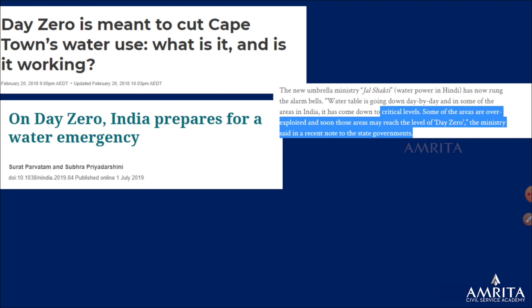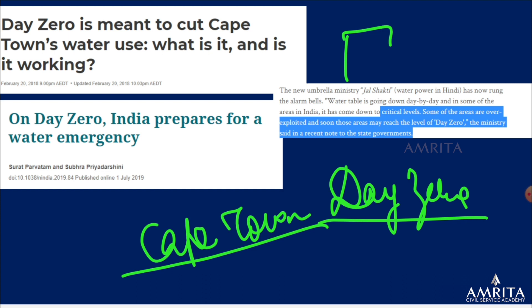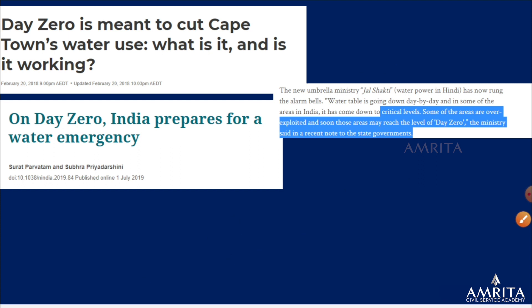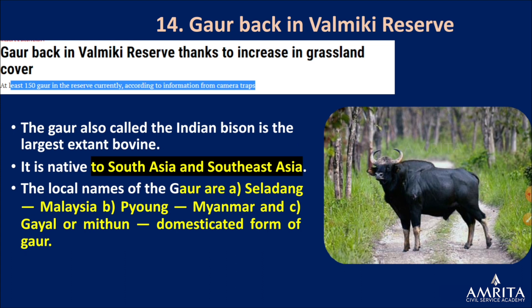In Cape Town, South Africa, Day Zero was nearly reached — during the India test series there, people were allowed to bathe for only five minutes. The Ministry of Jal Shakti has also stated that many over-exploited areas may soon reach Day Zero. That is why the government created the umbrella Ministry of Jal Shakti.